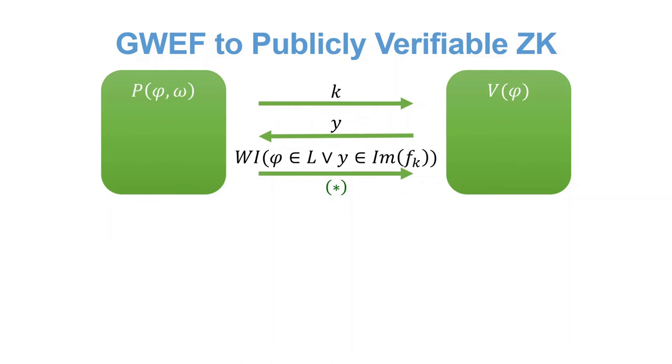In the last round, the prover will try to convince the verifier that either phi is in L, or that it knows a pre-image to the function. This is actually a little more subtle than that, as in the second case, we also require the prover to show that the key is a valid WEF key.